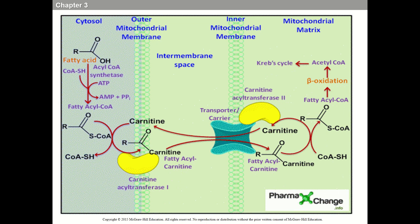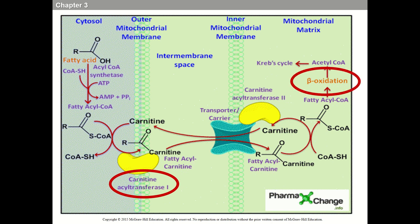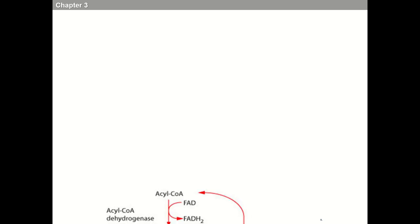To get fatty acids into the mitochondria specifically, the key enzymes are called carnitine acetyltransferase, also known as carnitine palmitoyltransferase — collectively called the carnitine shuttle. So fatty acid translocase (CD36) gets fats into the muscle cell; the carnitine shuttle system gets them into the mitochondria, where beta-oxidation then occurs.